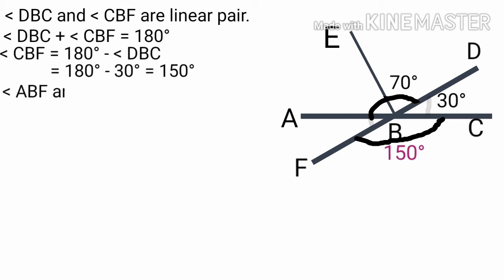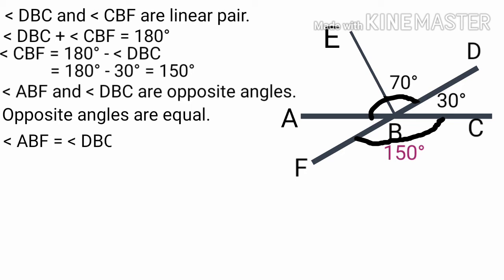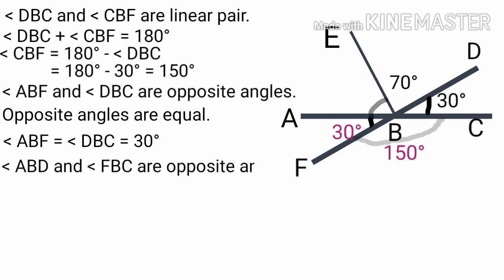Angle ABD and angle DBC are opposite angles. Therefore angle ABD is equal to angle DBC, that is equal to 30 degrees. Angle ABF and angle FBC are opposite angles. Therefore angle ABF is equal to angle FBC, that is equal to 150 degrees.